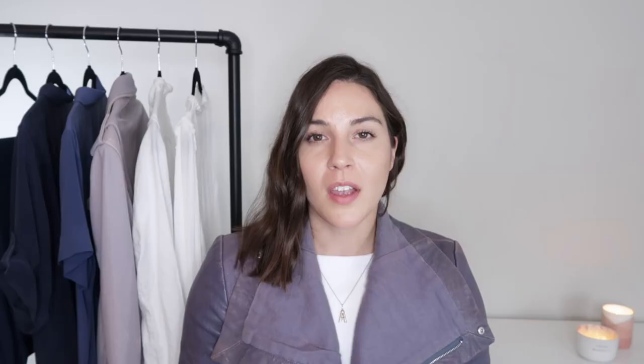Now that we've nailed down our undertone and value, let's look at intensity. Intensity refers to the saturation of your coloring, so your intensity will lie somewhere on a spectrum from soft and muted to bright and clear. Soft and muted colors have a low intensity, while bright and clear colors have a high intensity. You should choose colors that are a reflection of your natural level of intensity. Even when colors suit your undertone and value, they may look unnatural if they don't reflect your natural intensity. For example, highly saturated colors may cause muted skin tones to look dull, while soft colors will look serene and healthy.